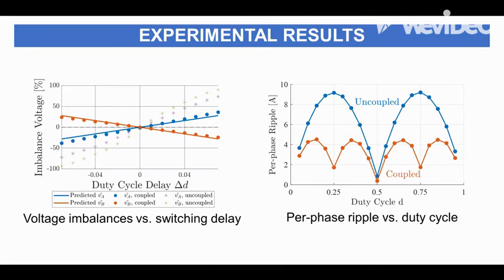In summary, by using coupled inductors and multiple interleaved FCML phases, we can reduce the ripple in each phase, and we can also reduce the flying capacitor voltage imbalance due to periodic disturbances. Thank you.